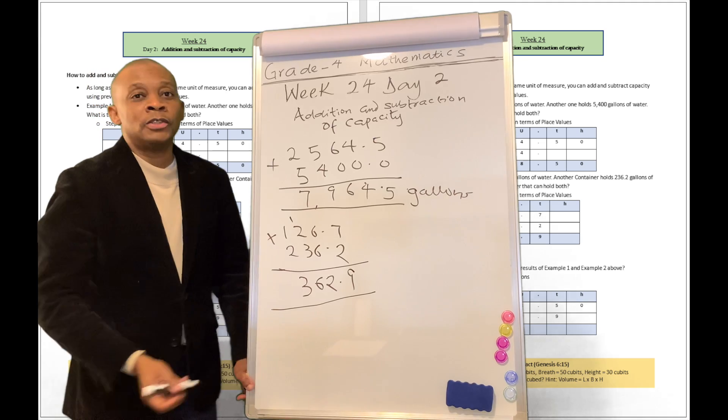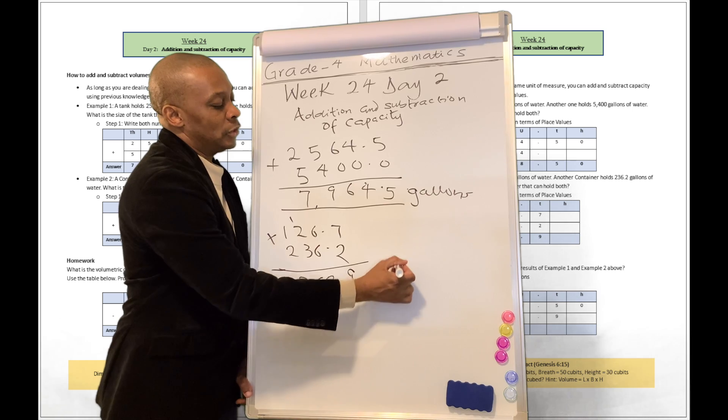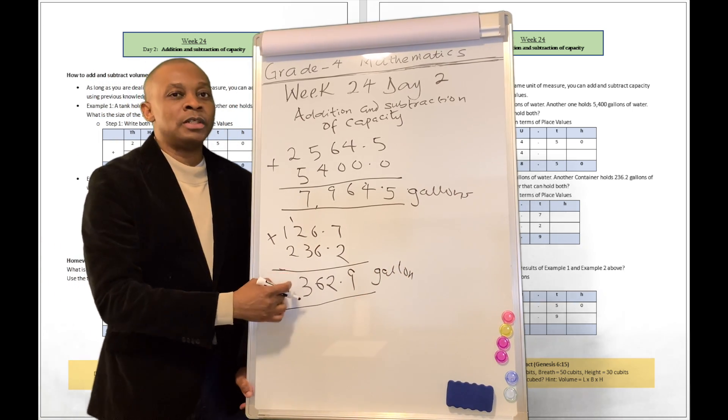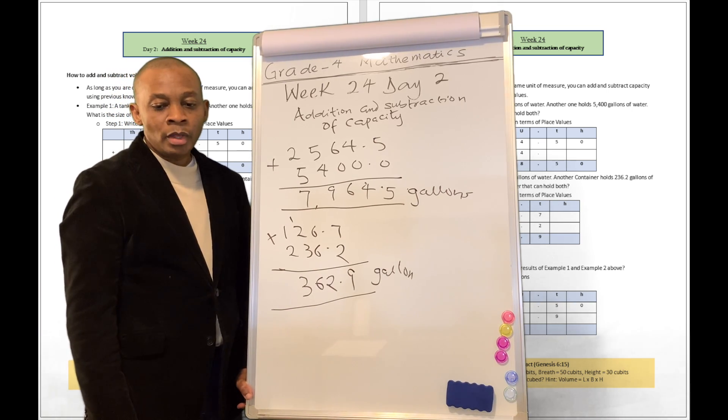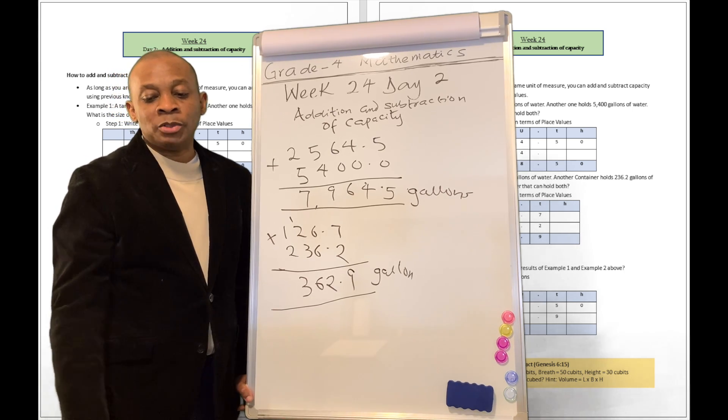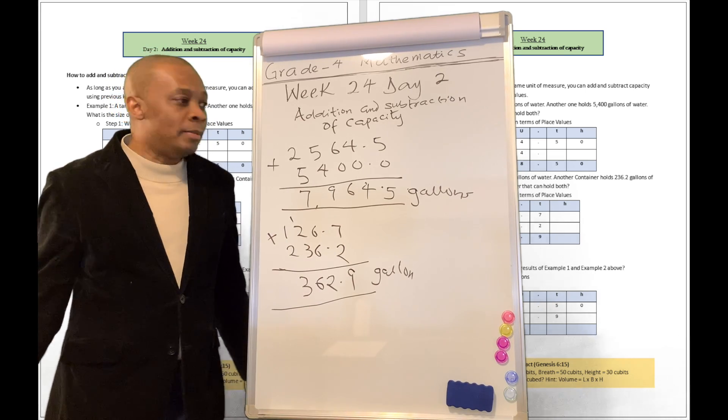So we have 362.9 gallons. We need a container that can hold 362.9 gallons of water. What is the volumetric difference between the results of 1 and 2? Well, that's a subtraction problem, right?